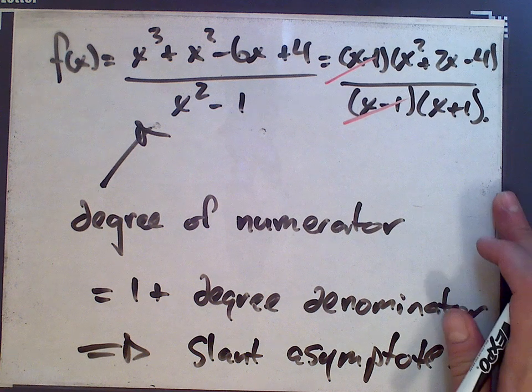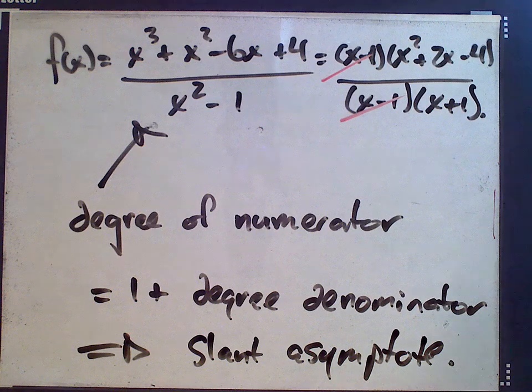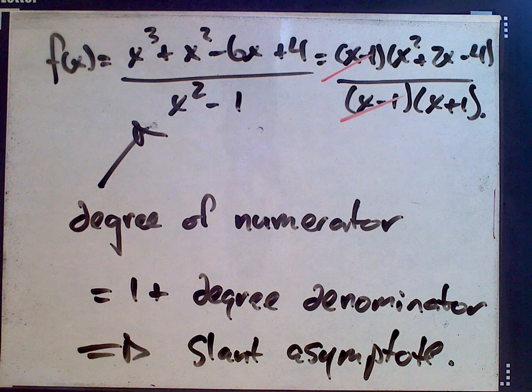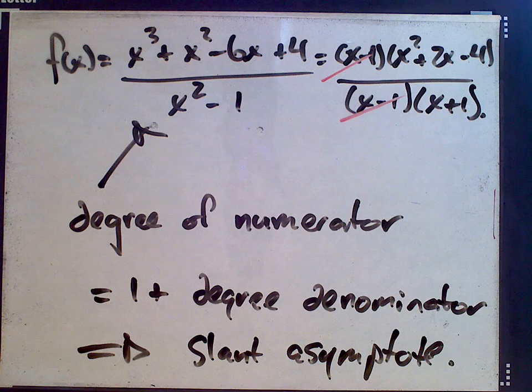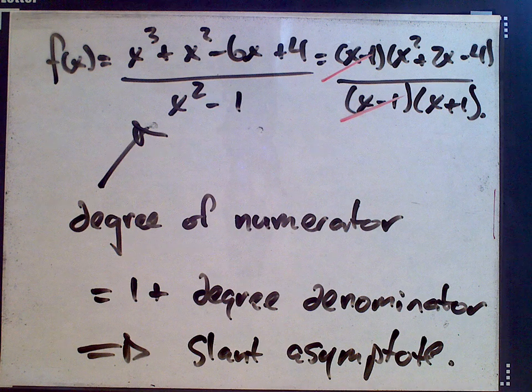So we have a slant asymptote as well. So in the end, no horizontal asymptotes, one vertical asymptote and one slant asymptote. That's the answer to the question.